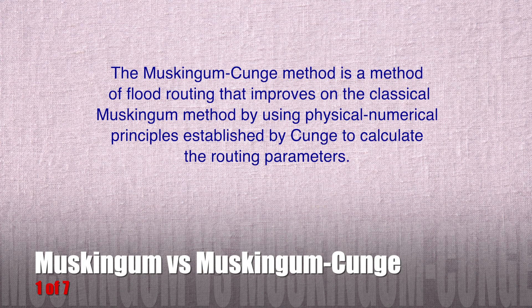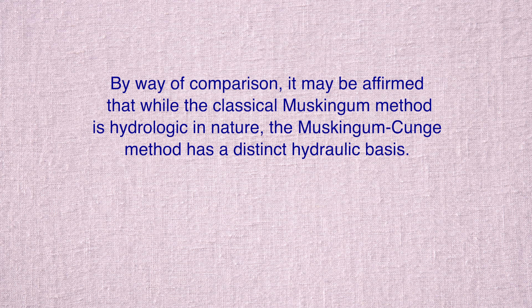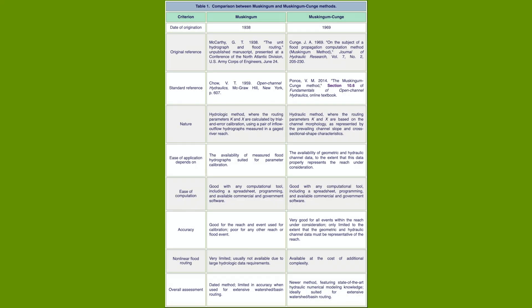The Muskingum-Cunge method is a method of flood routing that improves on the classical Muskingum method by using physical principles established by Cunge to calculate the routing parameters. While the classical Muskingum method is hydrologic in nature, the Muskingum-Cunge method has a distinct hydraulic basis. This table compares both methods, describing their differences.